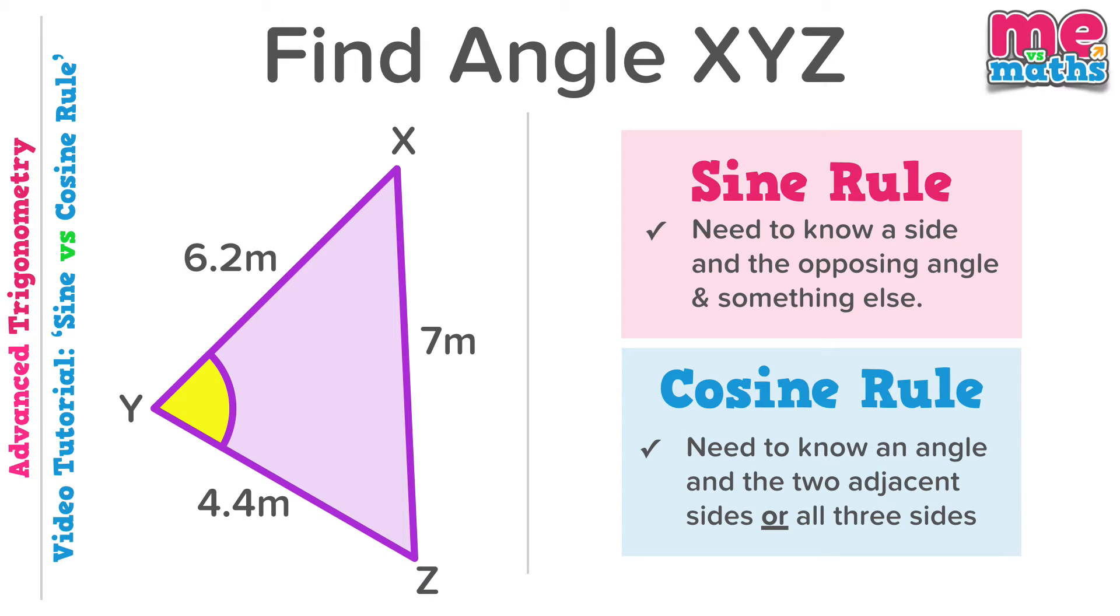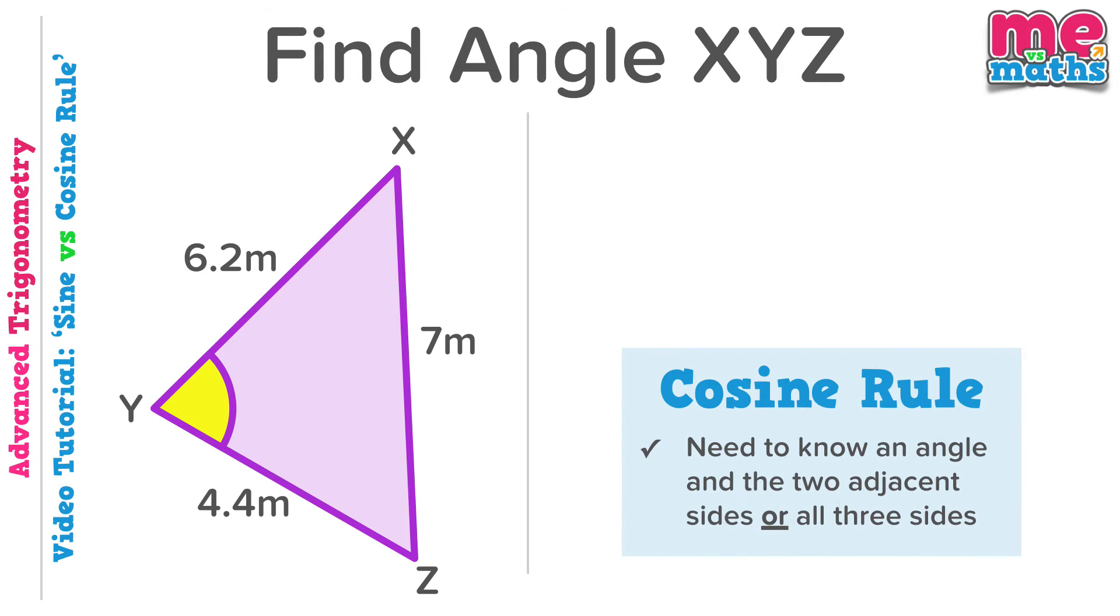So here we've been asked to find an angle. To be able to use the sine rule we need to know a side and the opposing angle. Here we don't know any angle, so the sine rule is of no use to us. To use the cosine rule, one option is that we know all three sides. Here that's exactly what we know, so we can use the cosine rule.